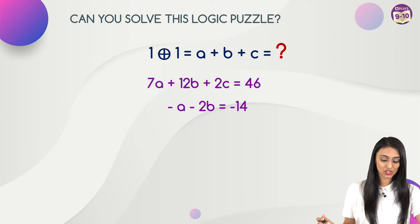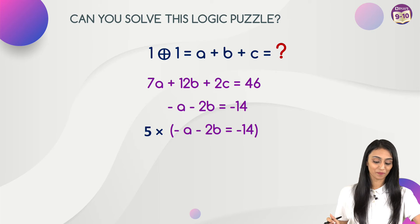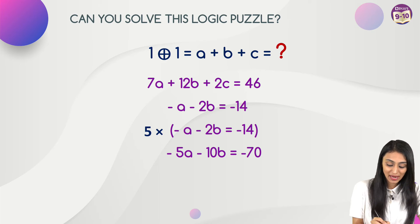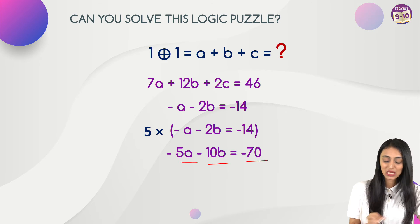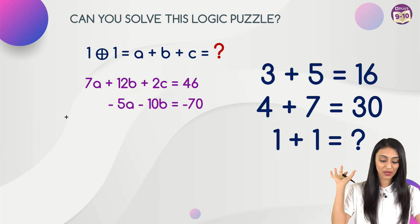Now what I am going to do with these two equations, to get the value of a, b and c, I am going to multiply this second equation with 5. So what I am going to get here? It's going to be minus 5a minus 10b equals minus 70. Each one of them is going to get multiplied with 5.